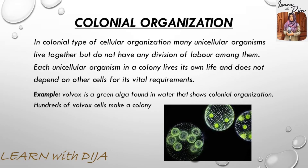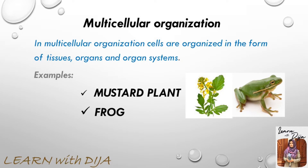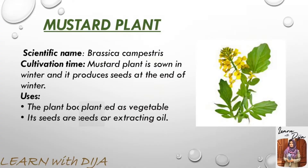The second type is colonial organization. With the passage of time and changes in their environment, organisms become more complex, developing different organs and organ systems. Examples include mustard plants and frogs.